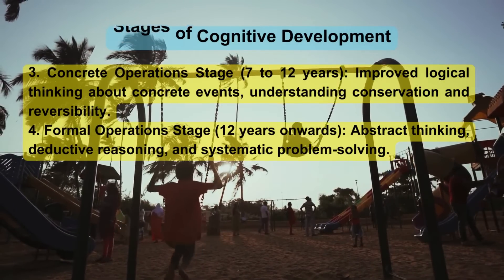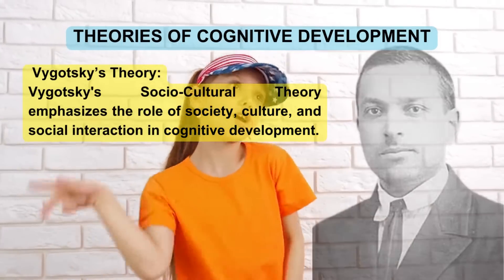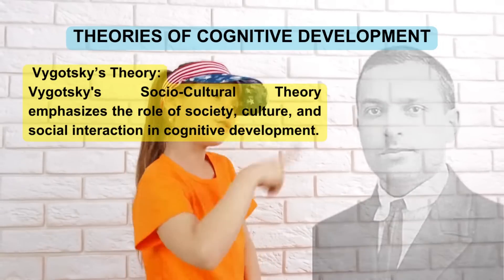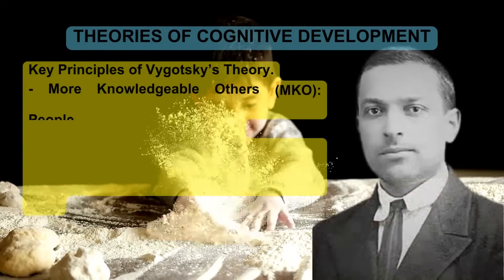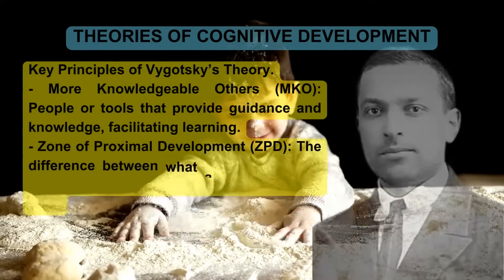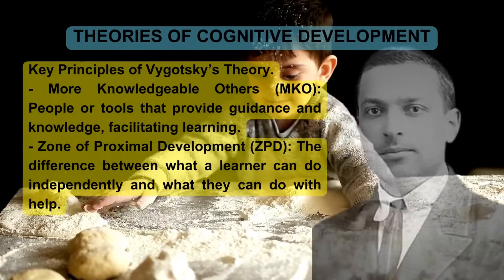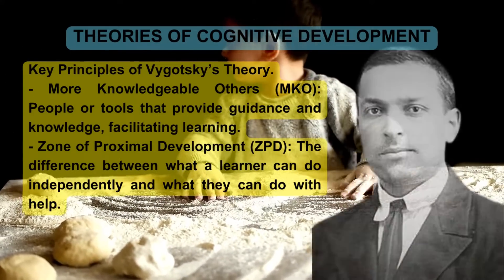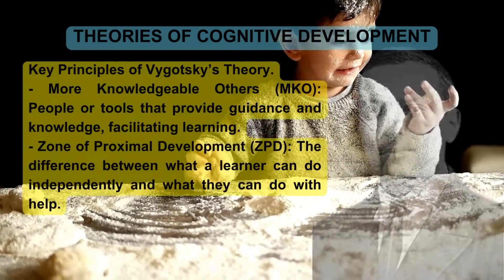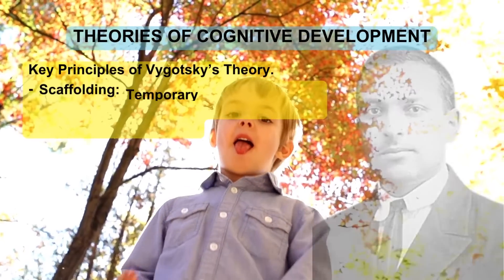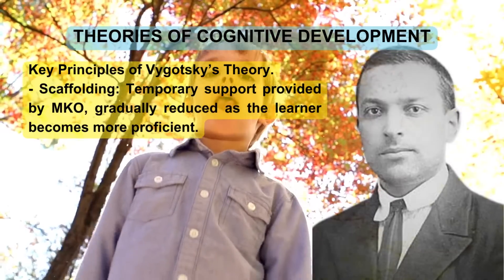Vygotsky's socio-cultural theory emphasizes the role of society, culture, and social interaction in cognitive development. Key principles include: More Knowledgeable Others (MKO) — people or tools that provide guidance and knowledge, facilitating learning. The Zone of Proximal Development (ZPD) is the difference between what a learner can do independently and what they can do with help. Scaffolding is temporary support provided by an MKO, gradually reduced as the learner becomes more proficient.